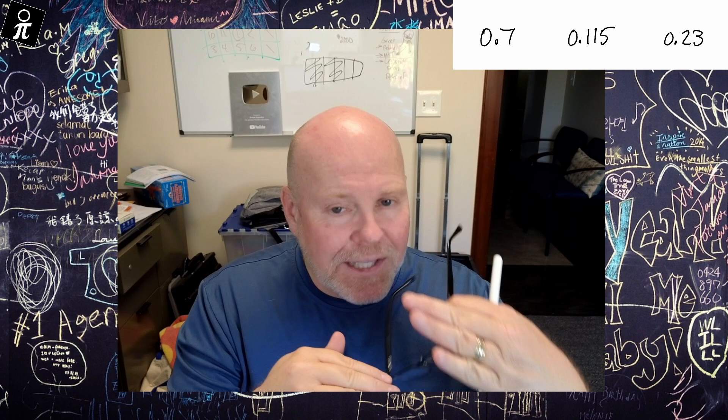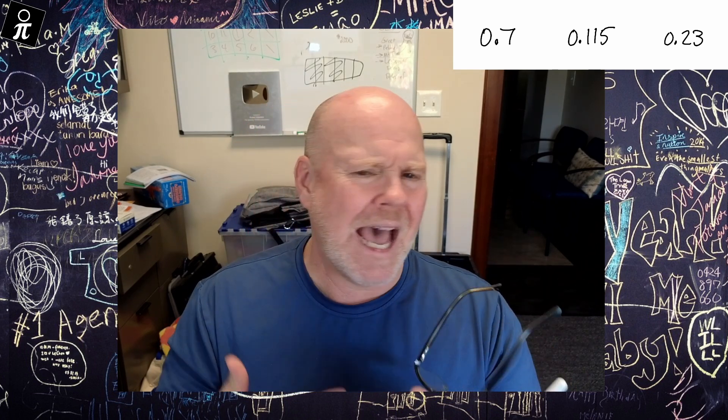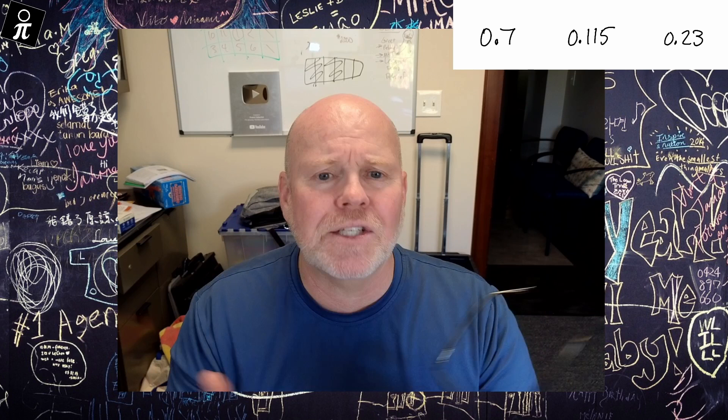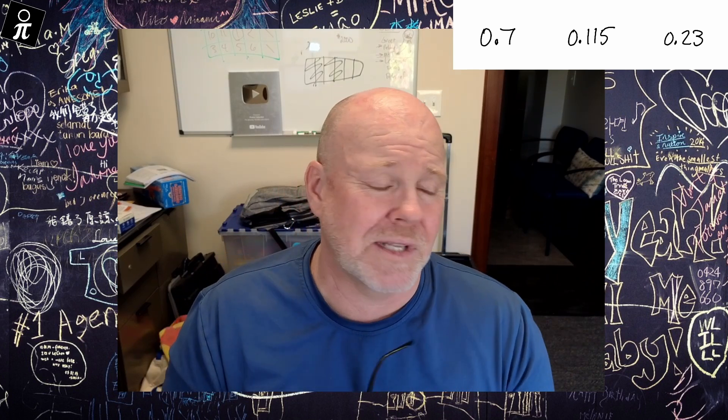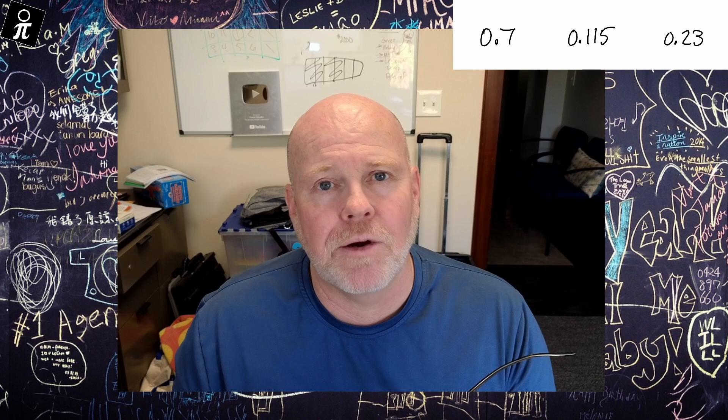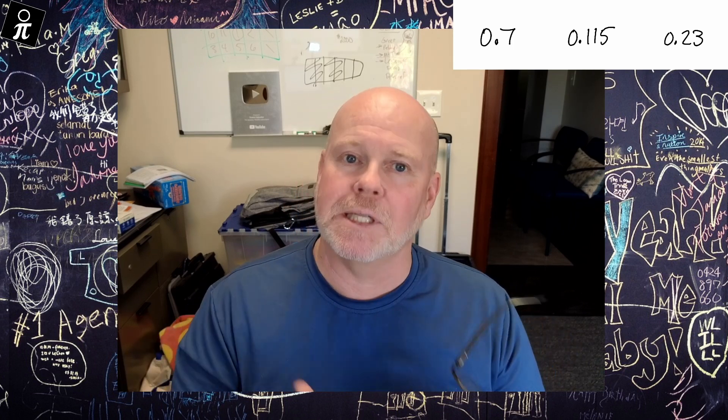And then if there was a tie, they would look next door to the hundredths place, and then as needed. Essentially, they went through this process of alphabetizing the numbers. And with 100% accuracy, they were able to sort these decimals from least to greatest.